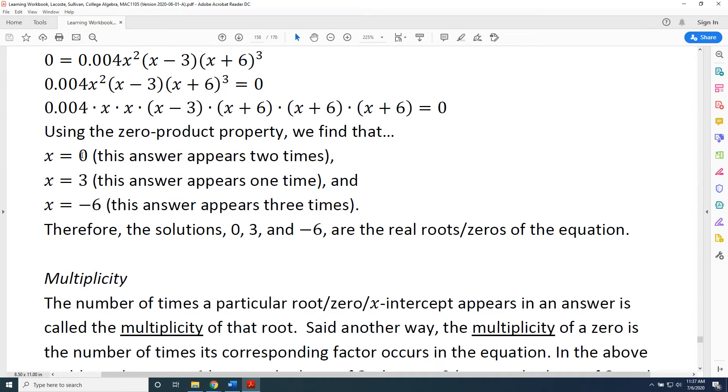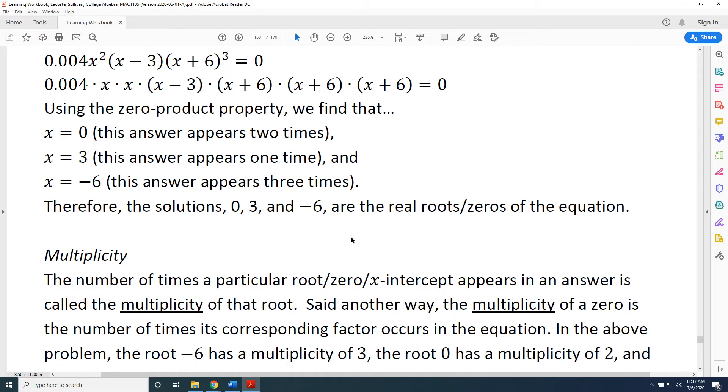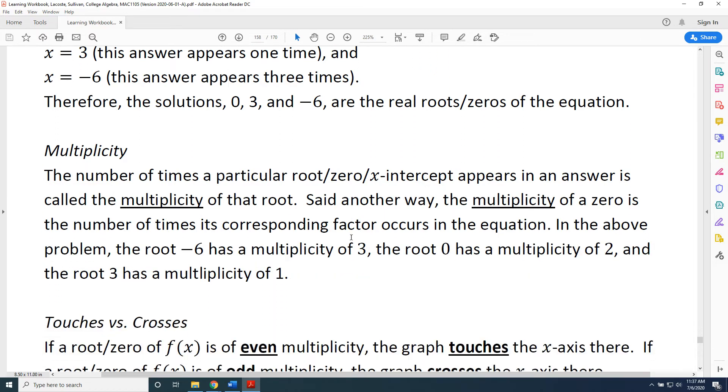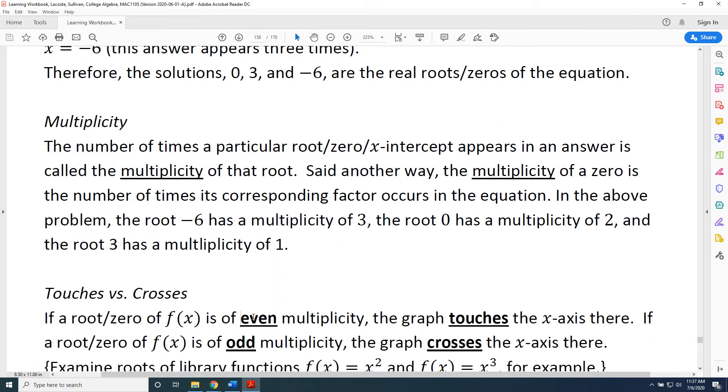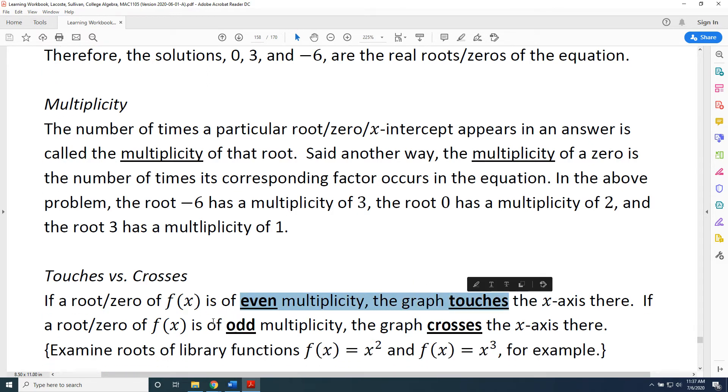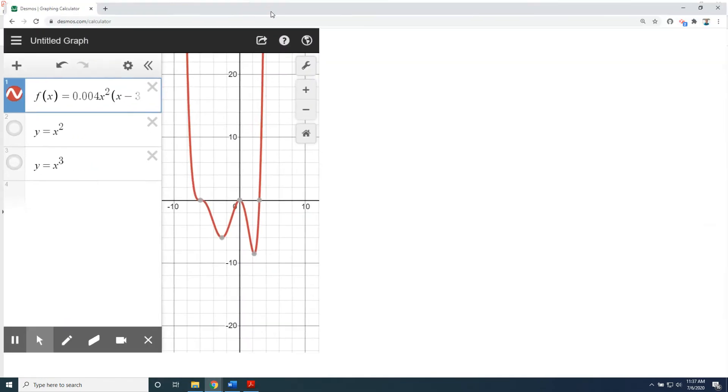So based on this, we would expect that at our graph, for the even multiplicity of 0, we would expect that it touches and bounces away from the x-axis. So for the odd multiplicity of 1 and 3, we would expect that it crosses. This is exactly what we observed.